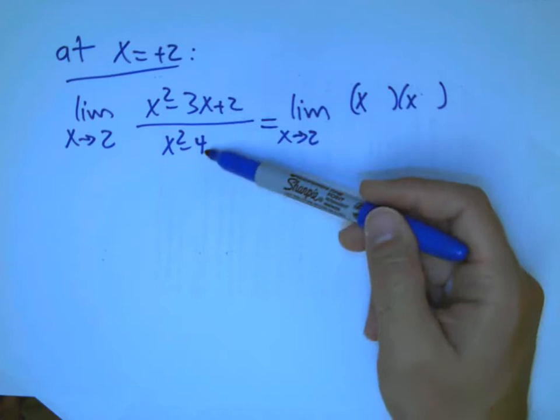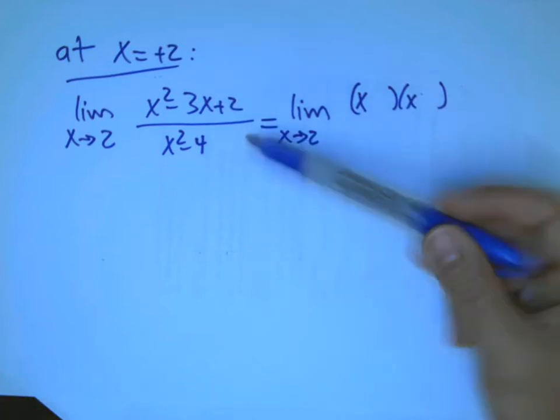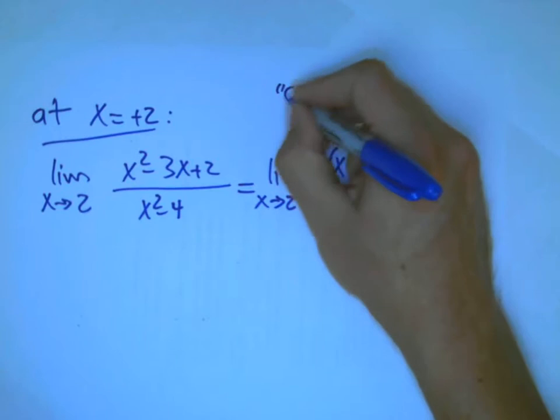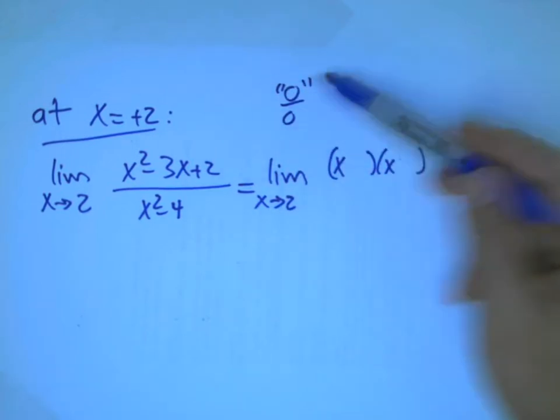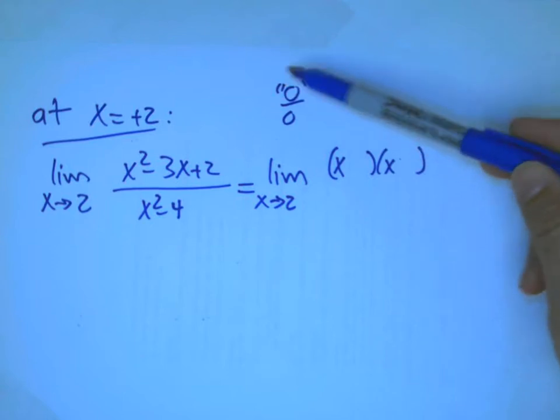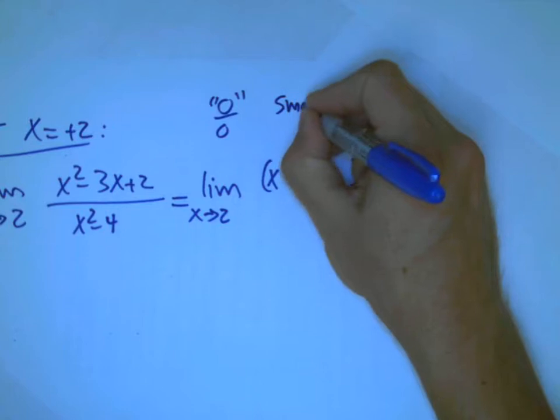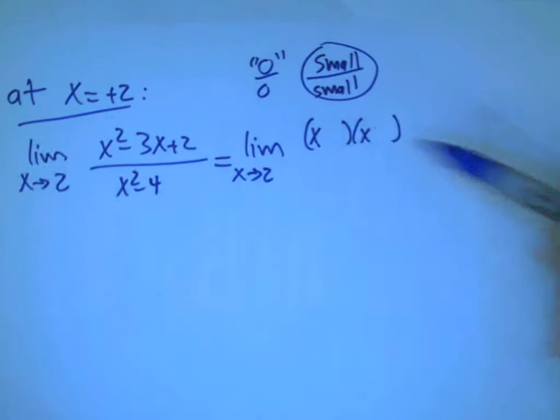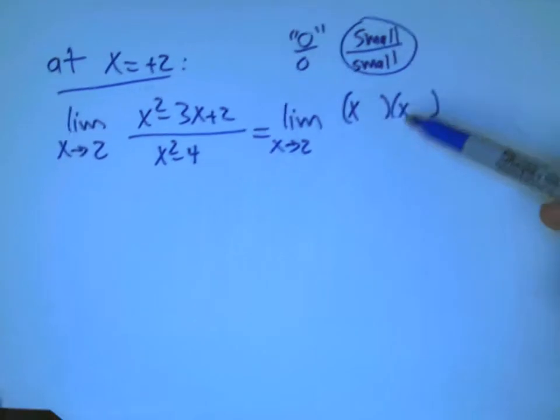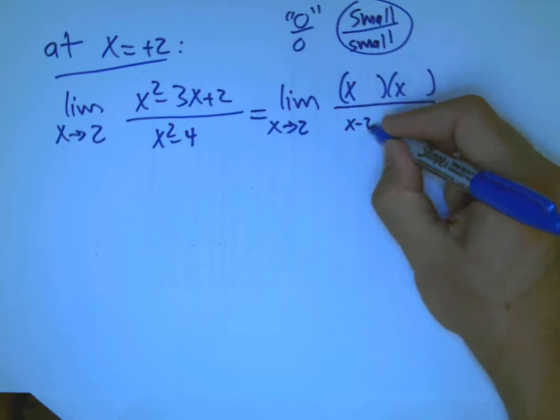If you plug in 2, you get 4 plus 2 is 6, minus 6, that's 0 on top. So, 0 over 0. Remember, I'm not saying it is the number 0 over 0. We could put in quotes. A lot of people like to put, this is the situation we're in. But I always put that in quotes, because I'm not saying that's what the answer is. The better way to say it is, it's small over small. And that could be anything. We have to do more work to understand that.